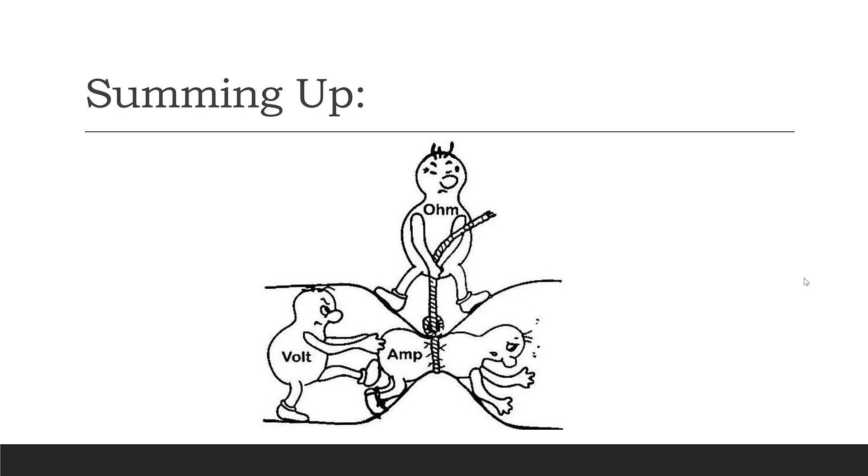So, that's a little bit about the three key terms—current, voltage, and resistance—and their units: amps, volts, and ohms.